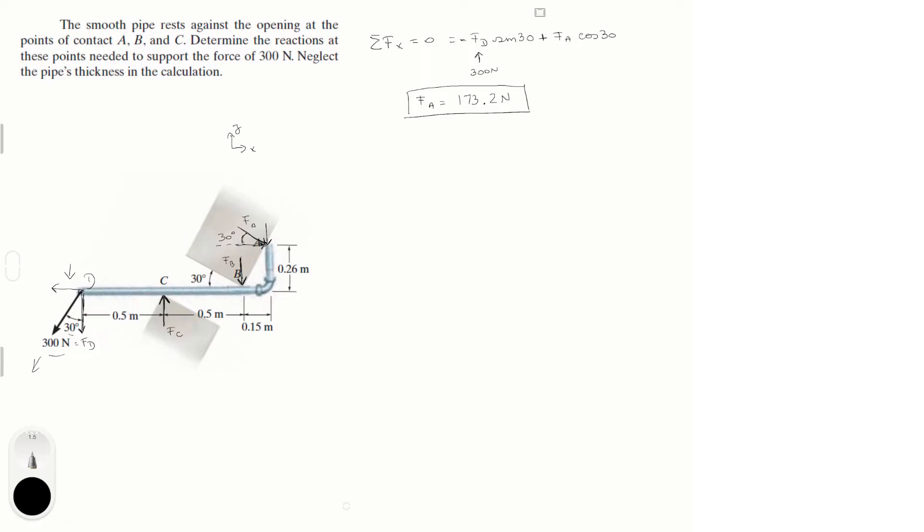And we should get that F of A is equal to 173.2 N. So we have F of A. Now look what we're missing. We were trying to find F of A, F of B and F of C. We went with F of A first because we could see right away that in the x components we know one x component and there's one other one which is F of A. So that's why we were able to find this one. So we're good with this one.